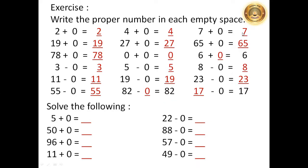7 plus 0 is equal to 7. 65 plus 0 is equal to 65. 6 plus 0 is equal to 6. 8 minus 0 is equal to 8. 23 minus 0 equal to 23. 17 minus 0 is equal to 17.